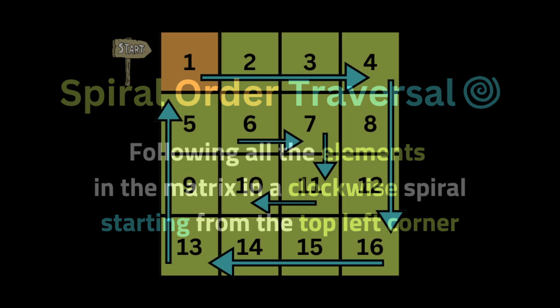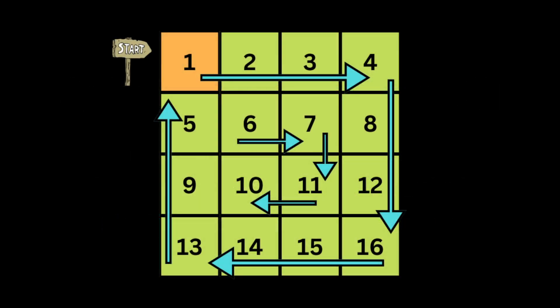Spiral traversal is a method of visiting all the elements in the matrix in a clockwise spiral starting from the top-left corner. First we visit the top row from left to right, then the rightmost column from top to bottom, then the bottom row from right to left, then the leftmost column from bottom to top.